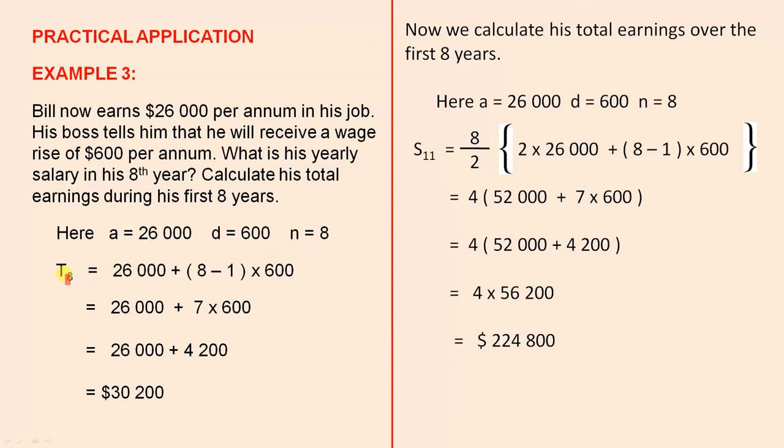So in his eighth year, so T8 is $26,000 plus n minus 1d. We've substituted the terms in. That's $26,000 plus 7 times 600, which is $30,200 when we simplify it.